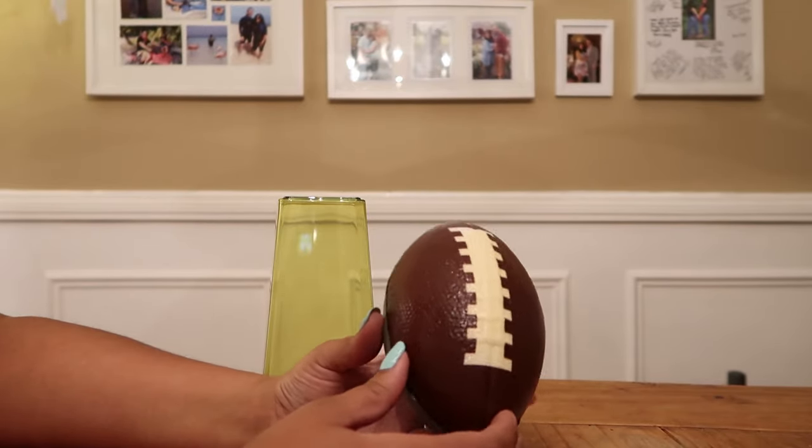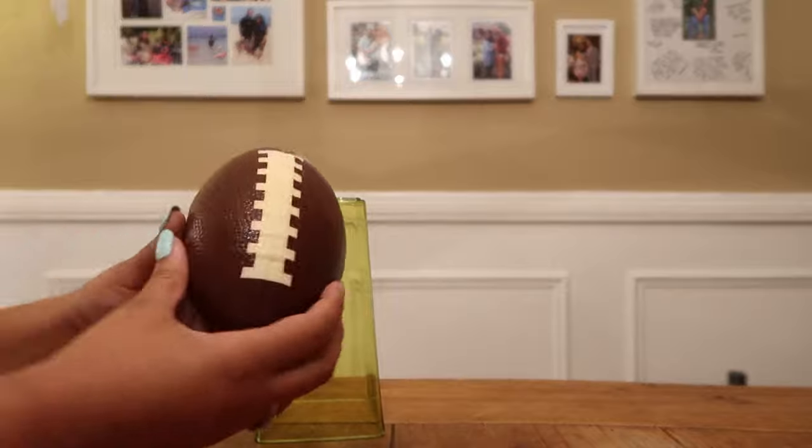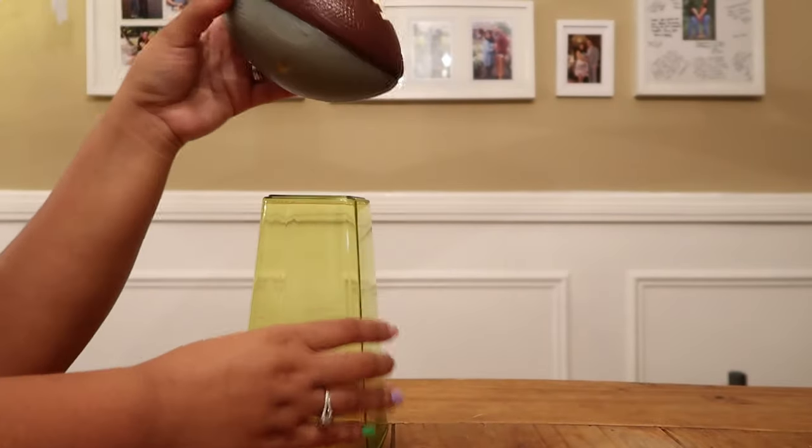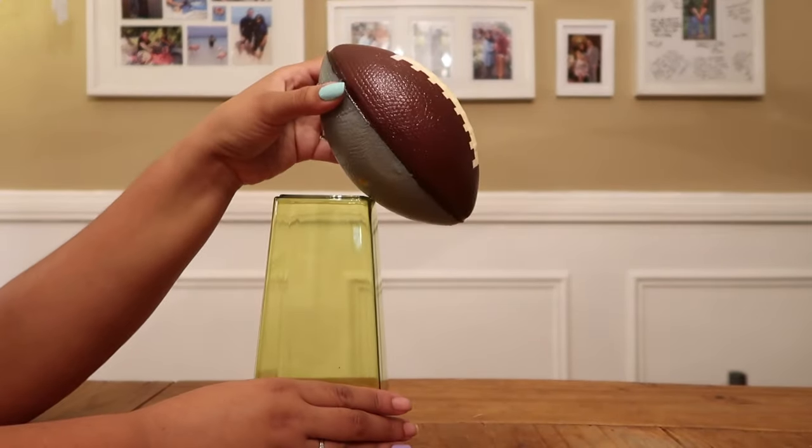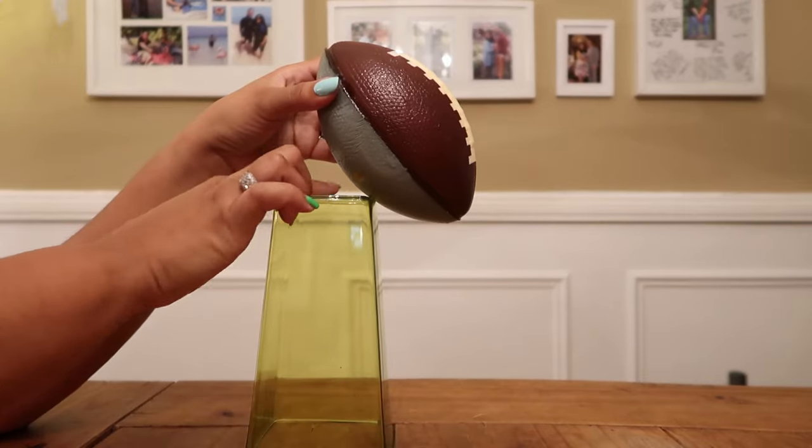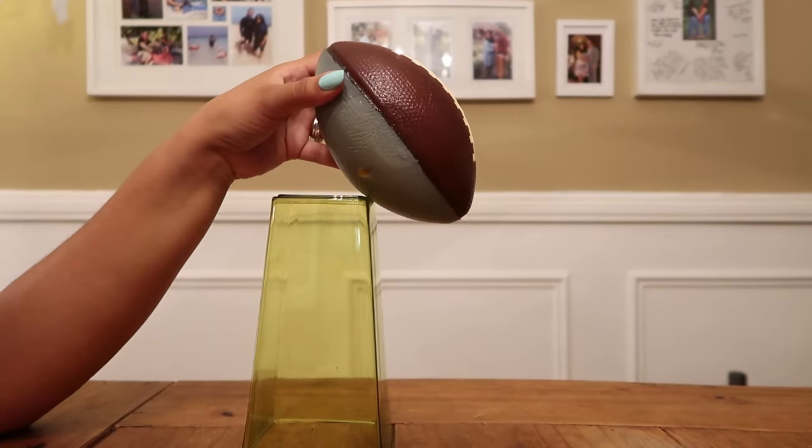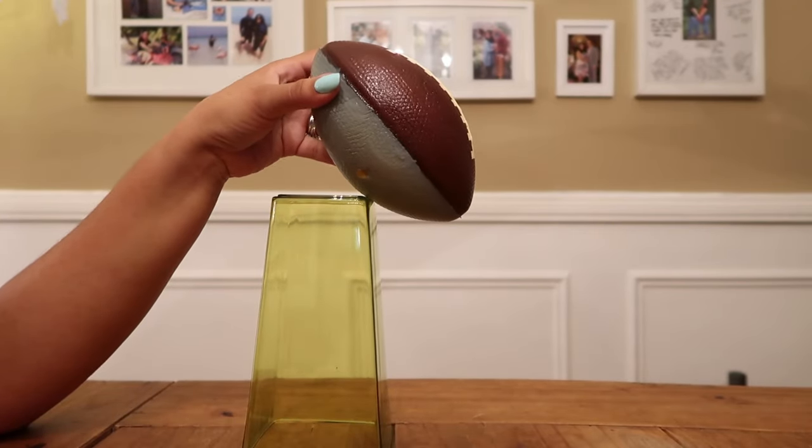So first we're going to start by turning our vase sideways and also our football and kind of measuring with our eye where we're going to carve out the football. Once you feel like it's at the perfect angle you're going to go ahead with your exacto knife.